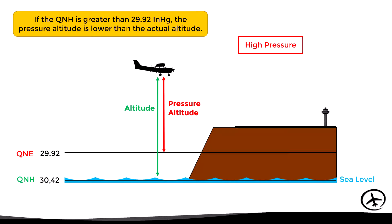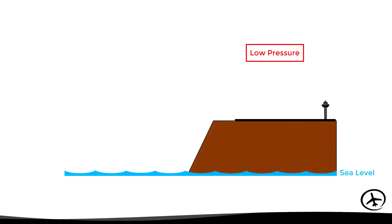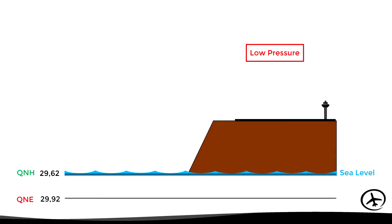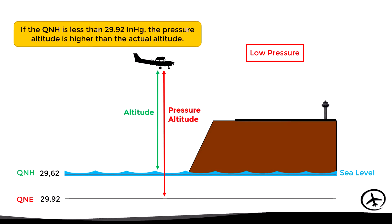On the other hand, if there are lower than standard pressure conditions, the QNH will be lower than the QNE, which means that the 29.92 isobar would be below sea level. Therefore the pressure altitude will be higher than the actual altitude.